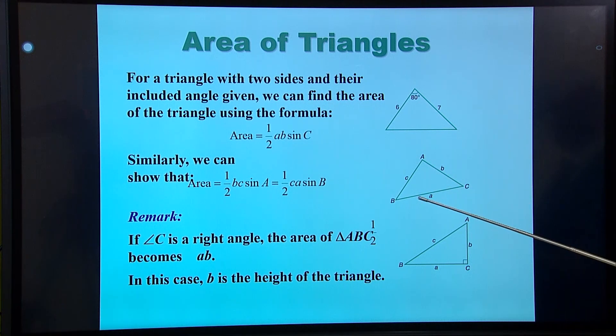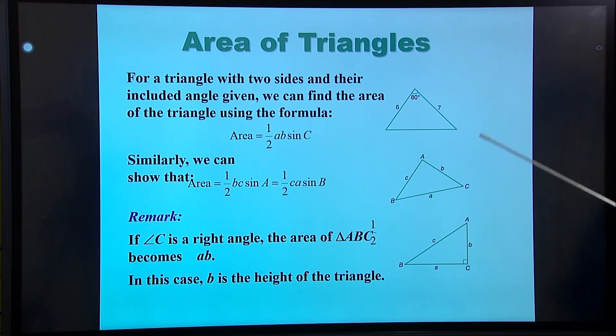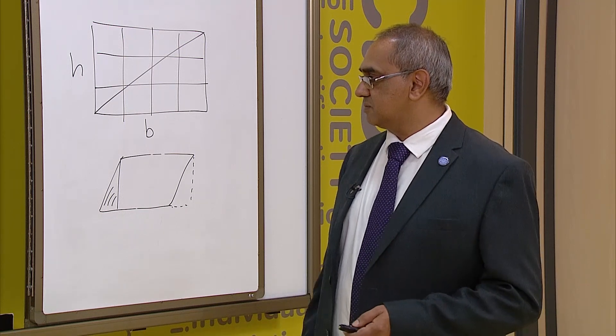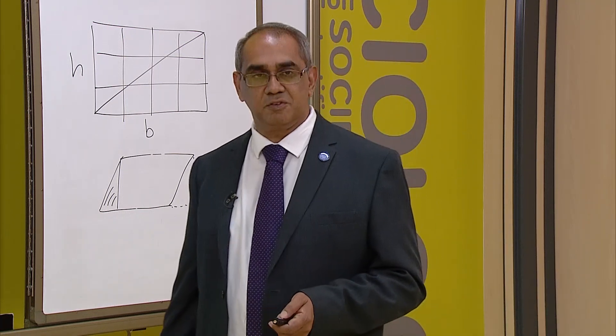We can show that for any of these triangles, BC sine A. So if I have angle B, then I can use C and A. If I have angle A, I can use B and C. If I have angle C, I can use A and B. So as long as I have two sides and the angle in between them, I can work out the area. So that seems fairly straightforward.